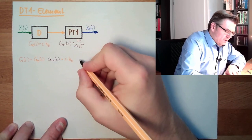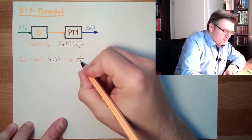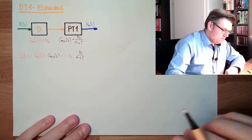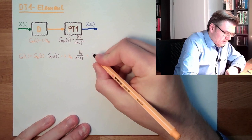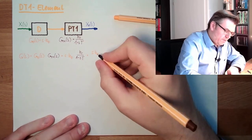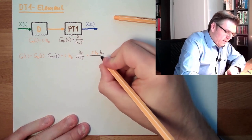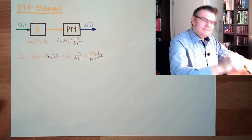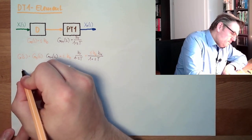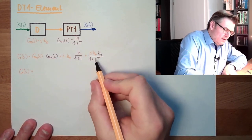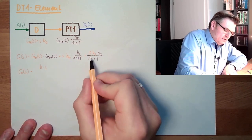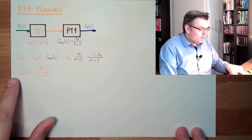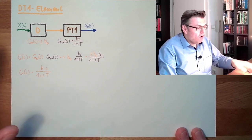So what is the total transfer function? In a series connection, we simply multiply the two transfer functions. So G(s) = G_D(s) · G_T1(s) = s · k_D · k_T divided by (1 + sT). The two constants multiply to give a single constant k, so the resulting transfer function is k · s divided by (1 + sT). This is the transfer function of a DT1 element.